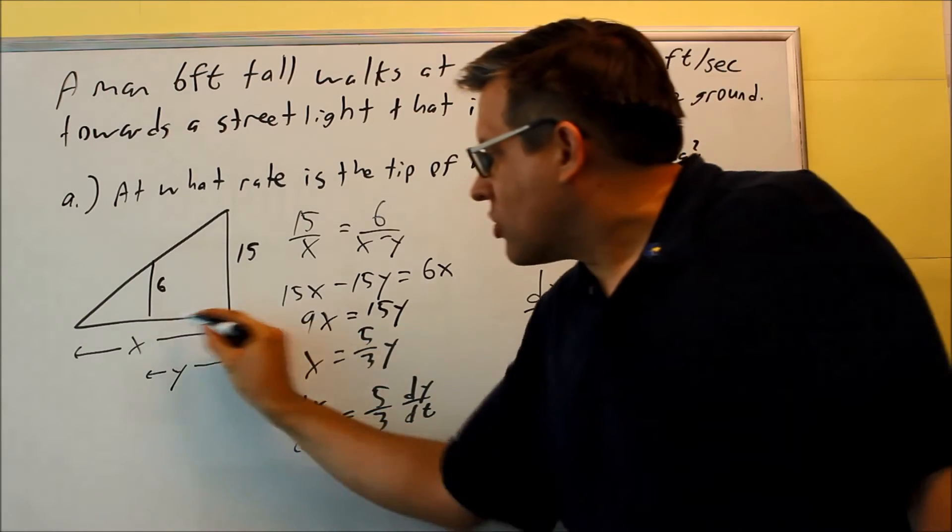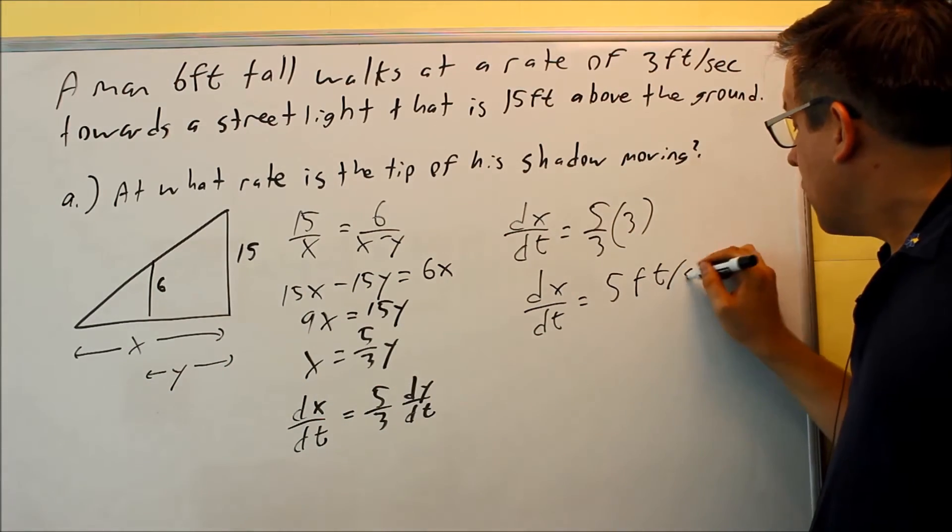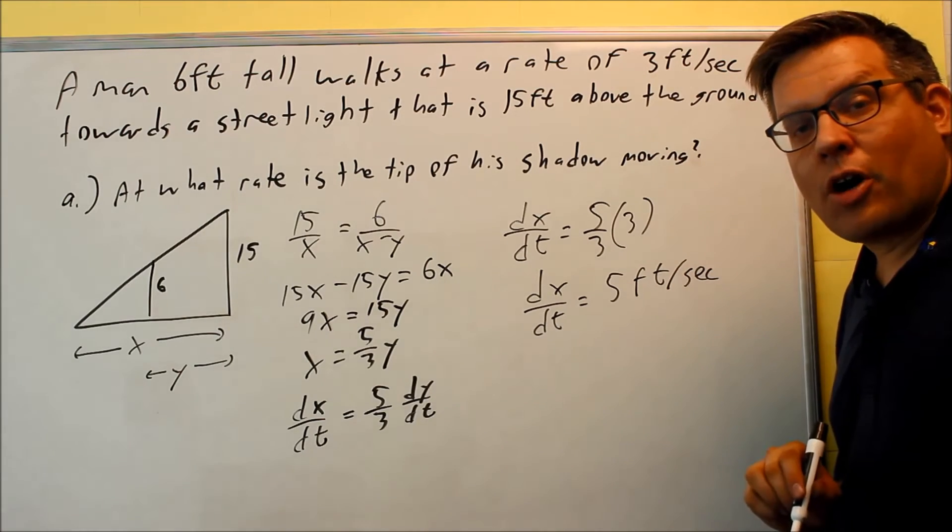Because if this is moving at feet per second, then the x has got to be moving that way as well. So your answer is going to be 5 feet per second. So now let's take a look at part B.